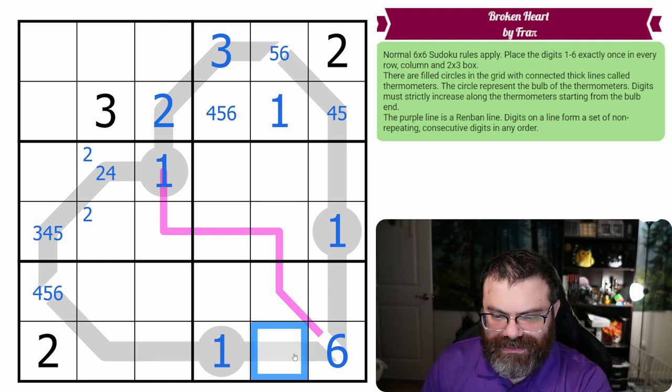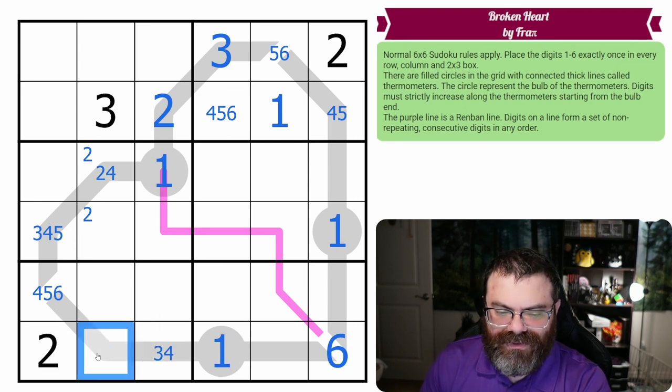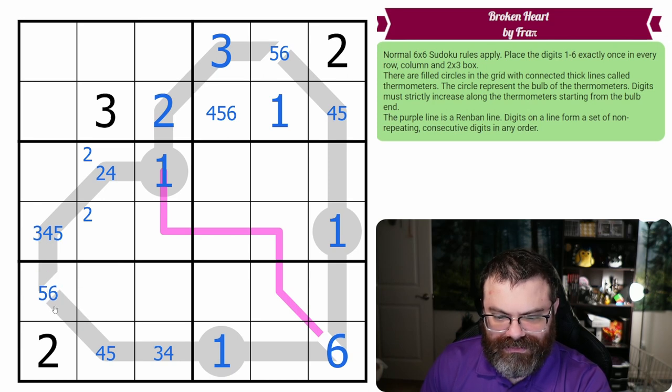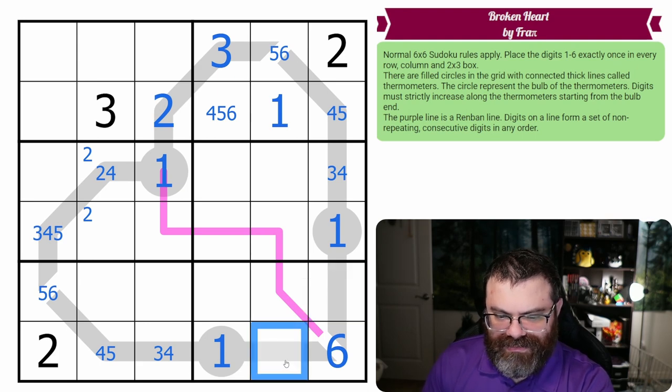If this was anything but six, it would go exactly here, and then it couldn't go in any of those spots. So this can't be a two. This is from three, four. This is only three, four, four, five, so this can't be a four.